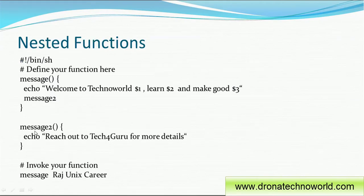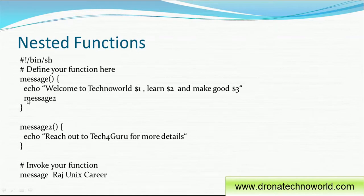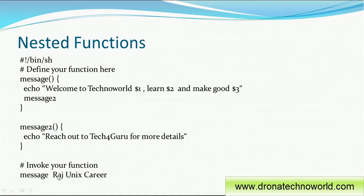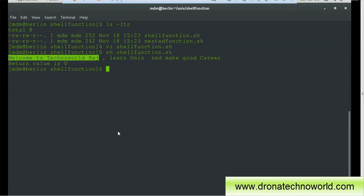What 'message2' is doing is simply echoing 'reach out to Techno Guru for more details'. So when we call message2, it prints that message, and then execution returns to the next statement in the calling function. When we call 'message' with 'Raj', 'UNIX', and 'career', execution goes to the message function, first prints 'welcome to Techno World', then calls message2, which goes to that function and prints 'reach out to Techno Guru for more details'. This is a simple nested function.